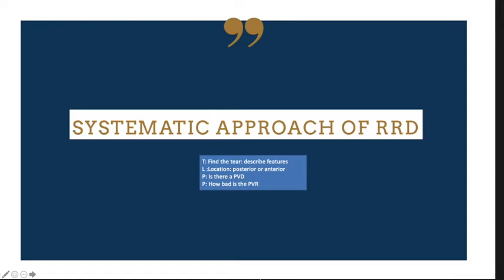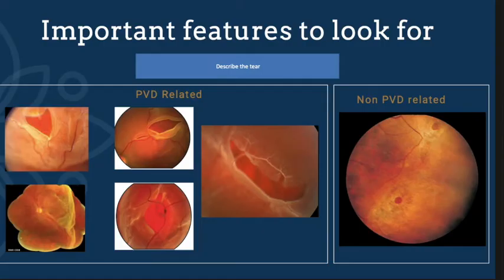There may also be changes in retinal folds. A systematic approach to describing rhegmatogenous retinal detachment involves: finding and describing the tear in detail, locating its position — whether supratemporal or inferior quadrant, and whether it is a posterior or anterior tear. We also need to assess whether there is posterior vitreous detachment and evaluate the severity of proliferative vitreoretinopathy (PVR). These four important steps must be considered when assessing rhegmatogenous detachment.